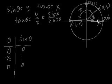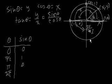Let's keep going around the circle. When theta equals 3 pi over 2, we intersect the unit circle down here at the point 0 comma negative 1. So sine of theta equals negative 1.